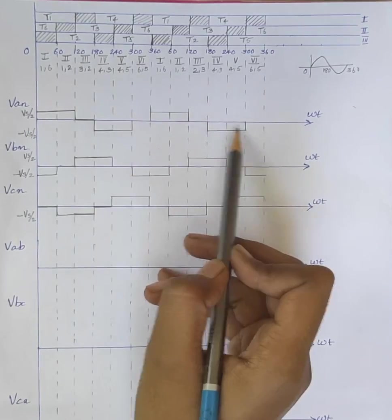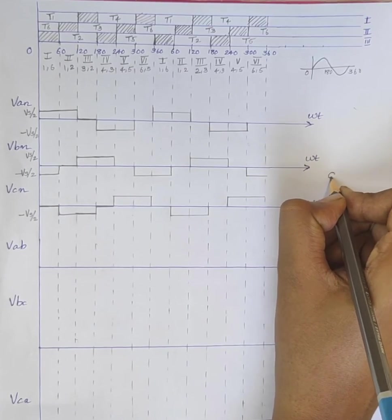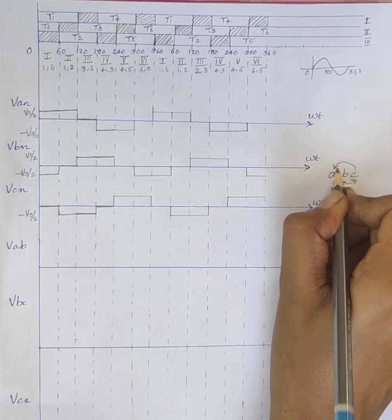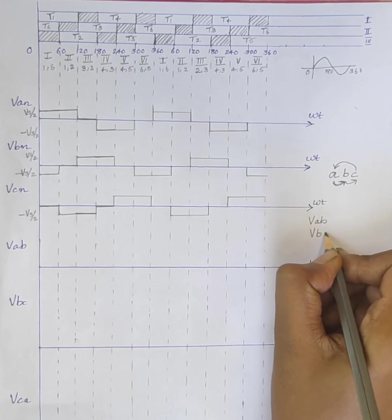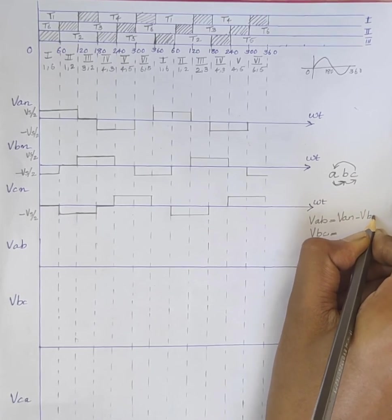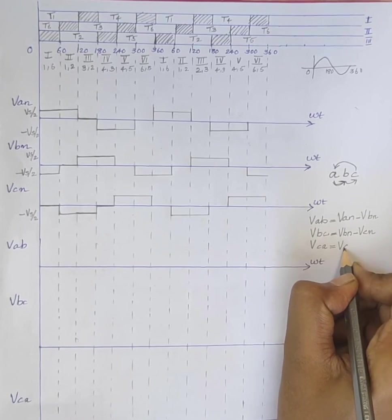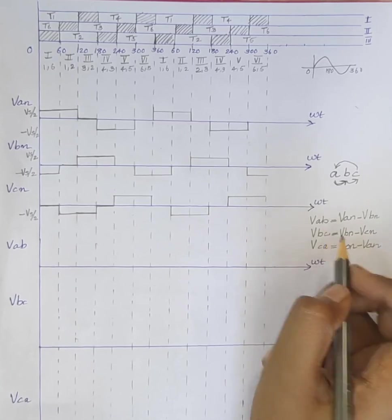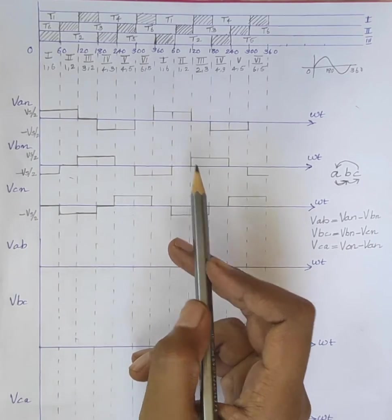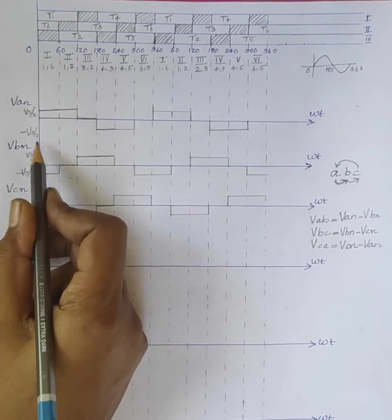These are the phase voltages VAN, VBN, and VCN. Next we will draw the line voltages. We know that if the phase sequence is A, B, C, then the line voltages are VAB, VBC, and VCA. VAB = VAN - VBN, VBC = VBN - VCN, and VCA = VCN - VAN.